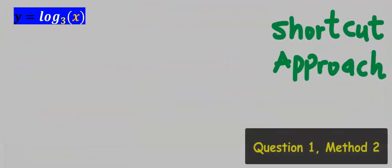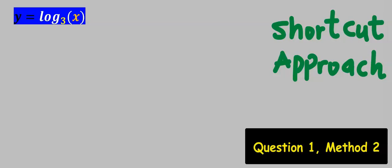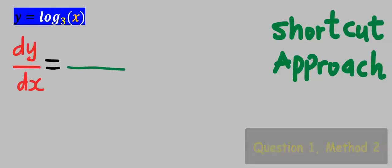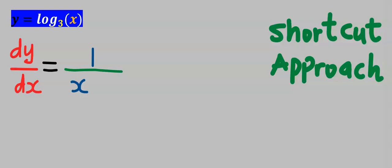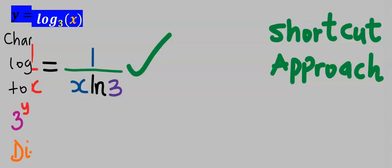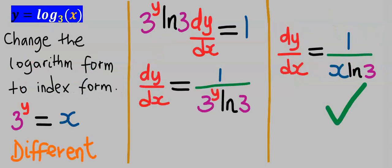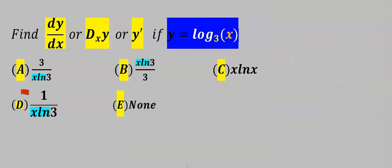Alternatively, using the shortcut approach to find dy/dx: draw a line. Next, differentiate x and your answer is 1. Next, bring the differentiated value, which is x, down to the denominator. Multiply this with the natural log of the base, which is 3. And this is our dy/dx, which is the same as we obtained earlier. From the options, our answer is D.